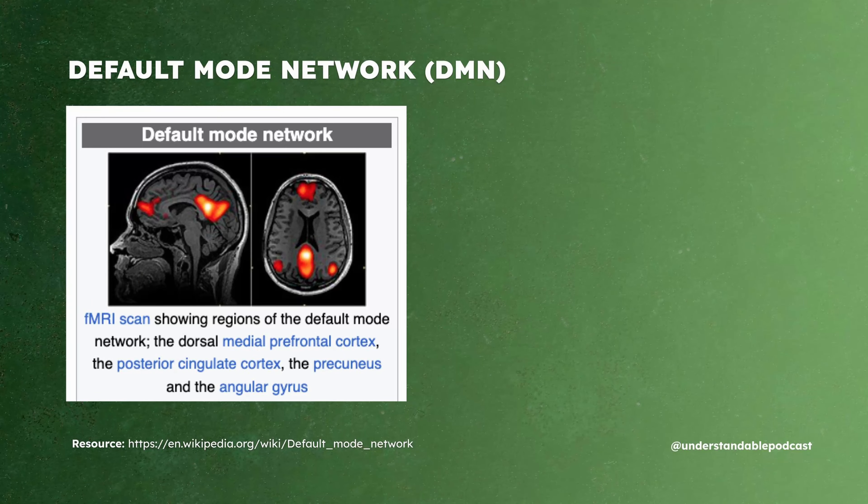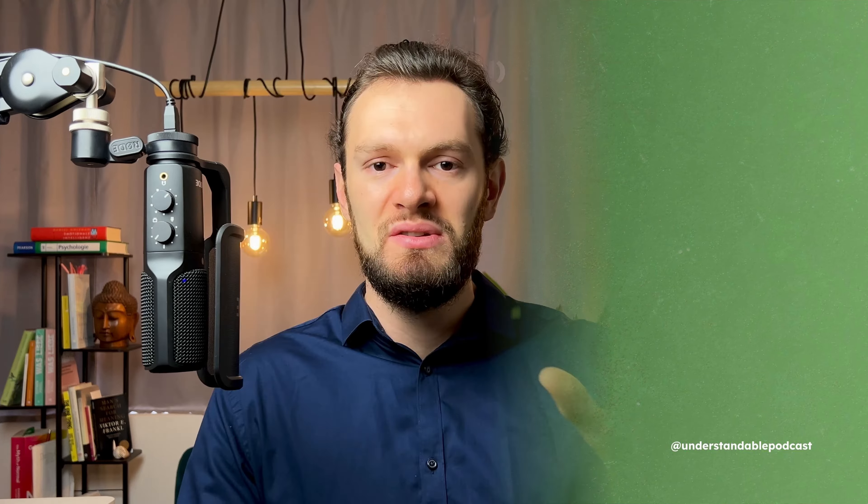The default mode network — short DMN — is normally active when we are resting, thinking about ourselves, or remembering personal memories. The DMN refers to all brain regions very active during mind-wandering and introspection, and it's less active when a person tries to focus on a specific task. This system is divergent in ADHD brains, and is therefore probably associated with distractibility. Brain scans of people with ADHD show lower activity in those specific brain regions.